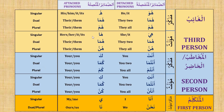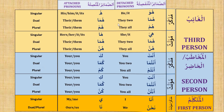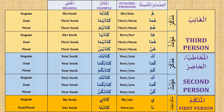We must learn attached pronouns together with personal pronouns. Now let's learn how to join attached pronouns to a noun. Hu — kitabuhu, his book; huma — kitabuhuma, their book (dual); hum — kitabuhum, their book (plural). Singular, dual, and plural — mudhakkar, masculine. Ha — kitabuha, her book; huma — kitabuhuma, their book (dual); hunna — kitabuhunna, their book (plural). These are feminine, mu'annath.